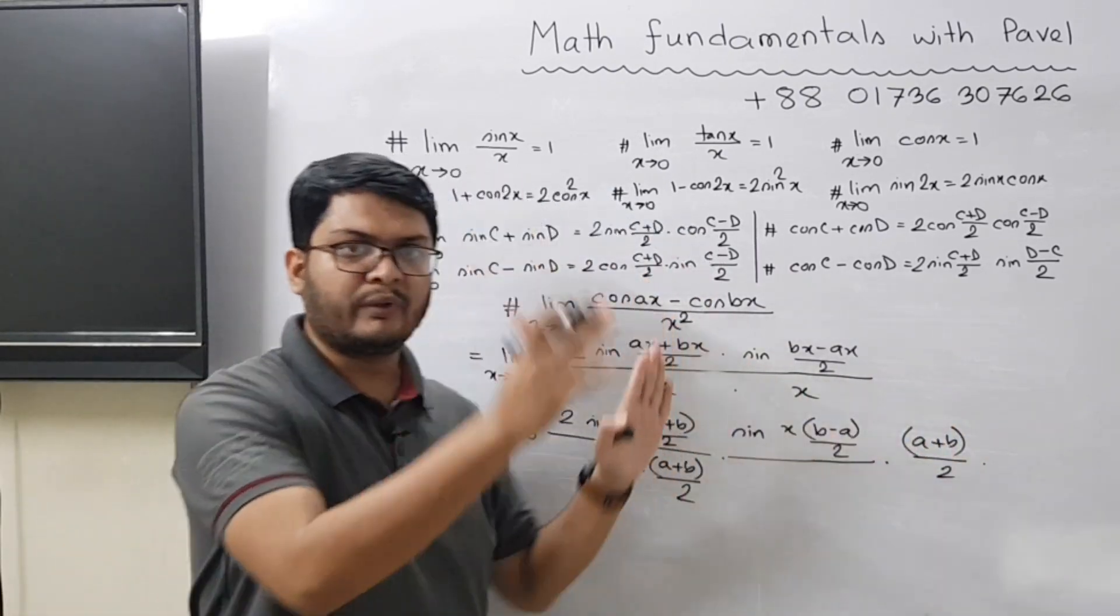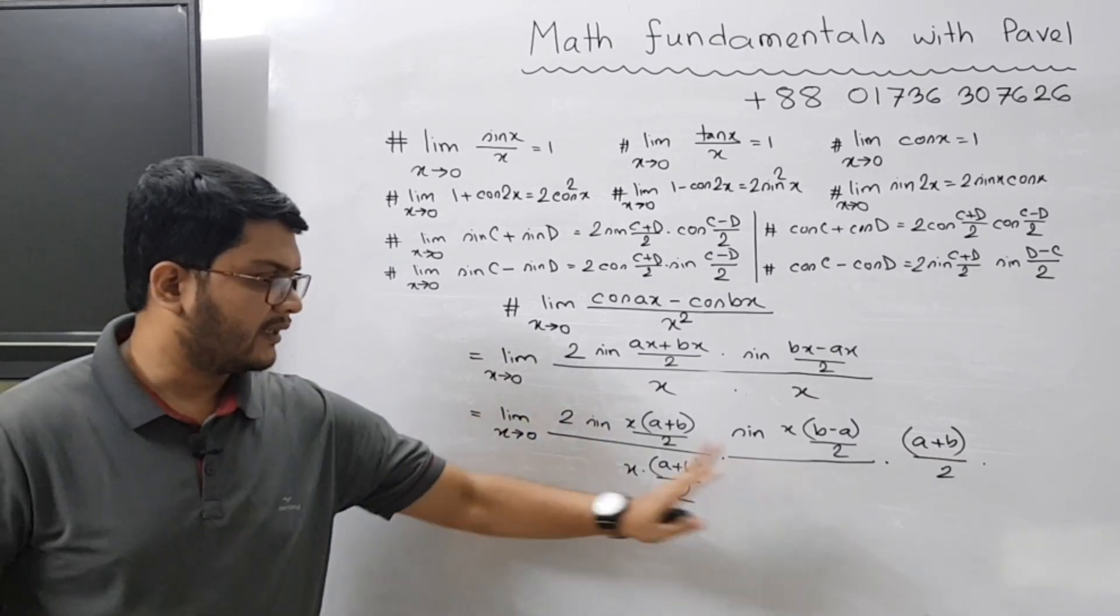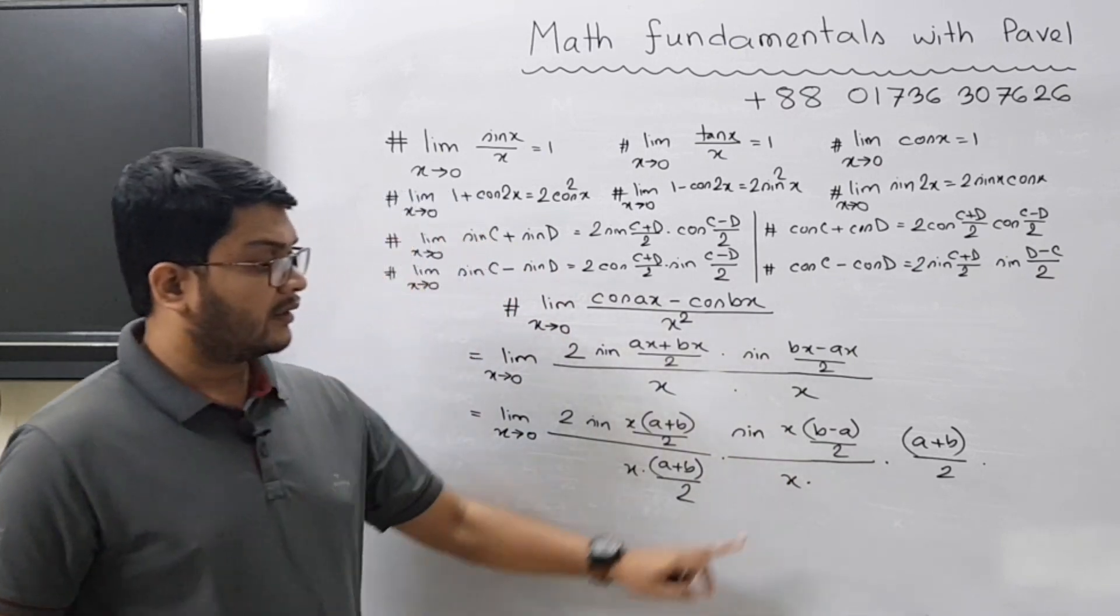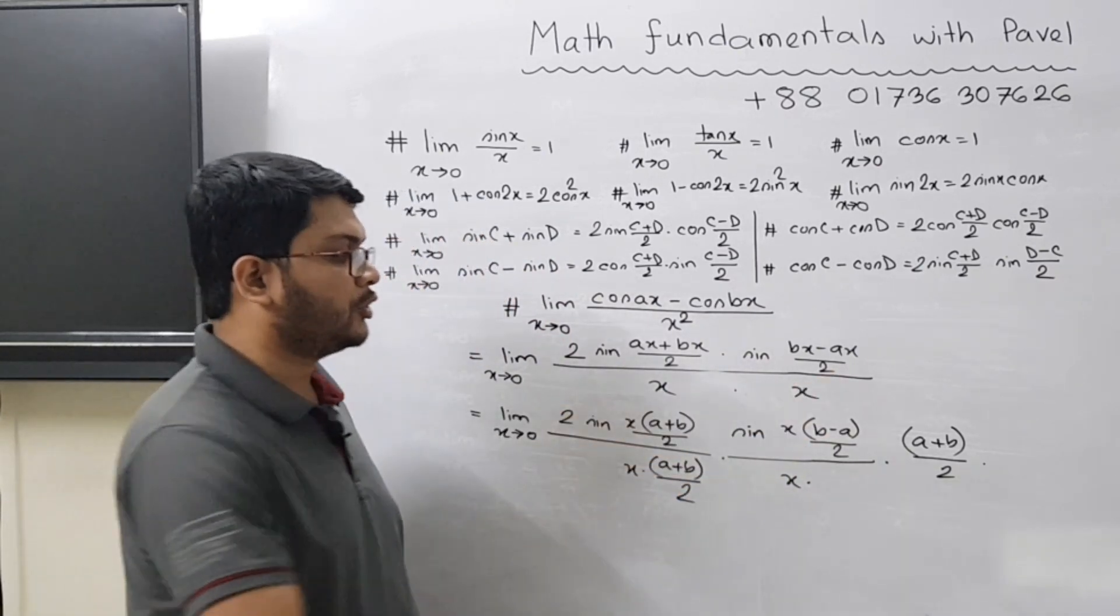So this a plus b by two and this a plus b by two will cancel out and you get back to the previous line. And here you had initially x, but in the numerator the theta is equal to x times b minus a by two, so you should have